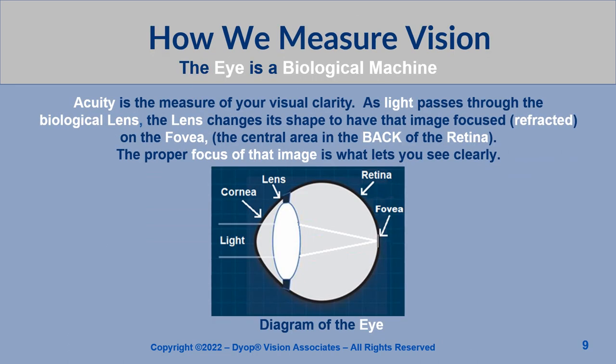Acuity is the measure of your visual clarity. As light passes through the biological lens, the lens changes its shape to have that image focused on the fovea — the central area in the back of the retina. The proper focus of that image is what lets you see clearly.